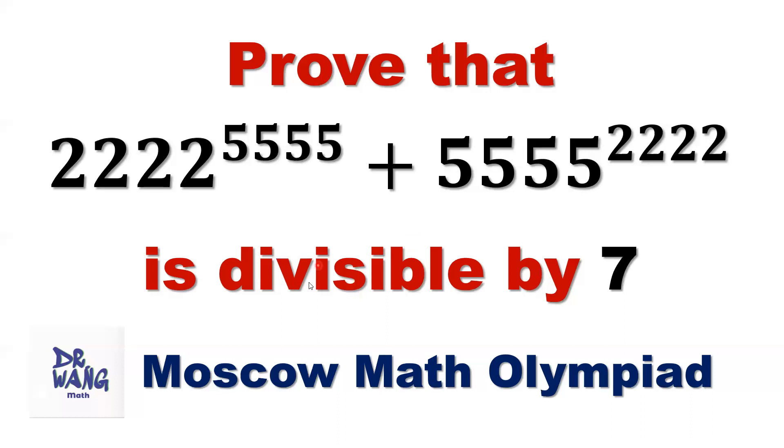We are going to use two fundamental algebraic results to complete this proof. This is the first result: a to the power of n plus b to the power of n is divisible by a plus b if n is odd.